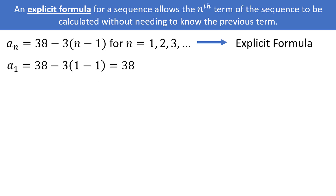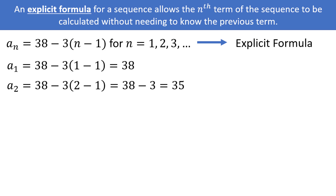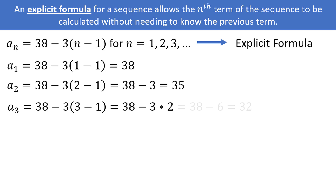If we plug in 2, we get 38 minus 3 times (2 minus 1), which is 38 minus 3, or 35. If we plug in 3, we get 38 minus 3 times (3 minus 1), which is 38 minus 3 times 2, or 38 minus 6, which is equal to 32. You can see that this is an arithmetic sequence, as the numbers are decreasing by the same amount on each successive value — each number is 3 smaller than the previous.